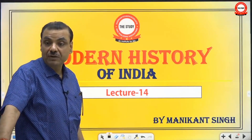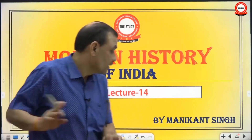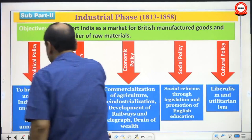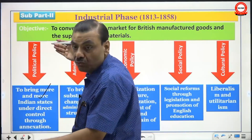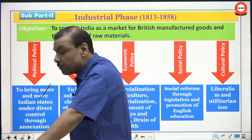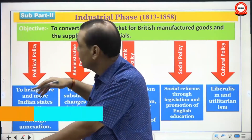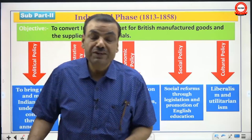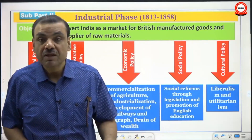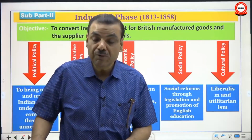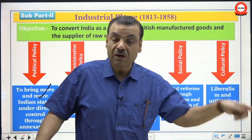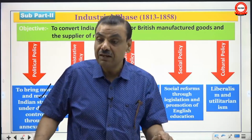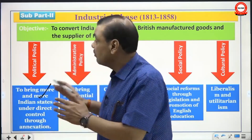We are going across the subtopic of industrial capitalism, or the industrial phase of colonialism in India. You may recall a diagram followed earlier. Modern history has been divided into four parts: the first part is the history of the 18th century, and the second part is colonialism. Colonialism is further divided into three sub parts: the first is the mercantile phase, and the second — which we are presently covering — is the industrial phase of colonialism.